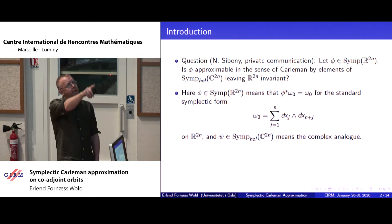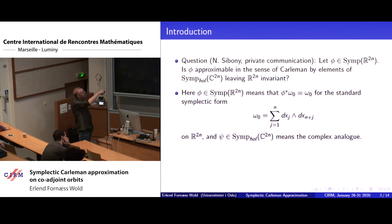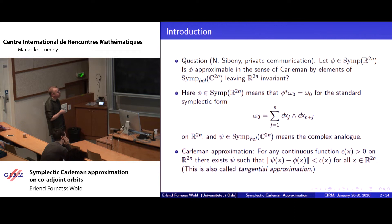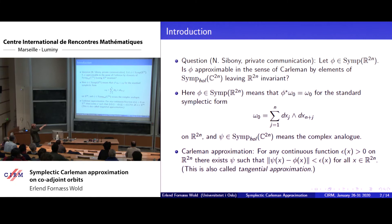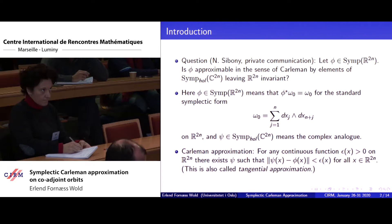Symplectic on R^{2n} just means that phi preserves the symplectic form, and similarly in the holomorphic case. What does Carleman approximation mean? This means that for any continuous strictly positive function epsilon on R^{2n}, there should exist a holomorphic real symplectomorphism of C^{2n} such that psi approximates phi to precision epsilon(x) for x on R^{2n}. The point is that this is much more than uniform approximation, or even approximation on compacts — epsilon could go to zero as fast as you want as x goes to infinity.